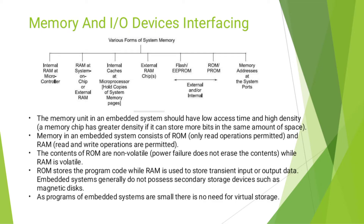RAM is defined as Random Access Memory and ROM as Read-Only Memory. The memory unit in an embedded system should have low access time and high density, so it can store more bits in the same amount of space. Memory in an embedded system consists of ROM, which can perform only read operations, and RAM, which is Random Access Memory where read and write operations are permitted. The contents of ROM are non-volatile, while RAM is volatile.